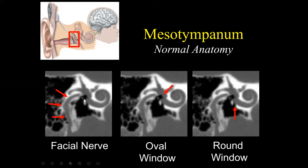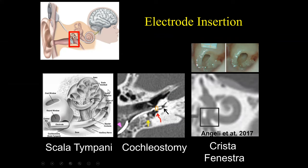In the middle ear cavity, we also have to comment on the course of the facial nerve. We should always comment on its location. We should also comment on whether the oval window is patent and whether the round window is patent. Eventually, the cochlear electrode has to be inserted through the round window — either via a round window approach or via a cochleostomy.